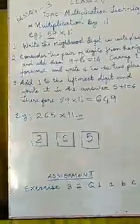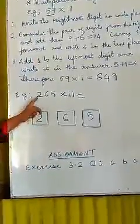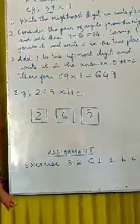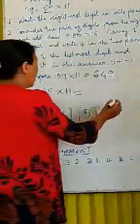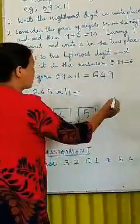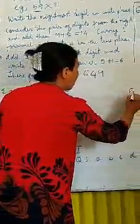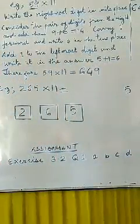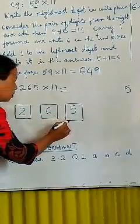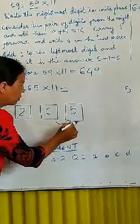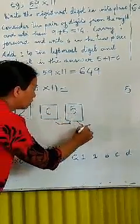Let us take another example. 265 into 11. Here, the first step is to write the rightmost digit in the 1 space or the unit space. Here, it is 5. Then, the next step is, let us add this 2. Here, we write 5.